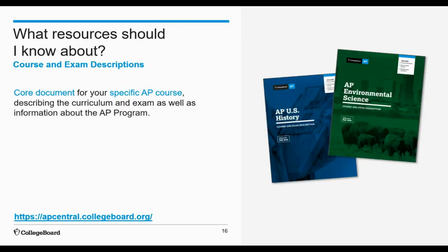Starting with the course and exam description, or CED — this is the core document for your AP course. Each AP course has its own CED. It contains course-specific information for your curriculum and exam: it details the content and skills expectations for your course, contains unit guides with pacing and sequencing recommendations, includes instructional approaches you may want to use when planning and implementing instruction, and information about your AP exam with sample exam questions and more.